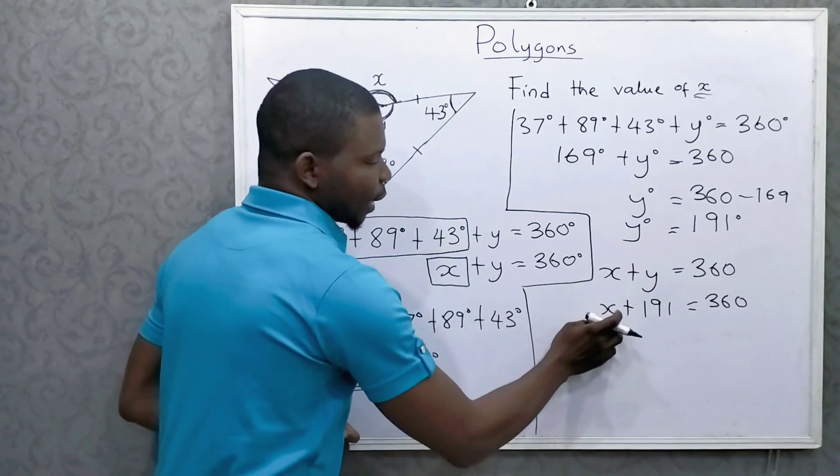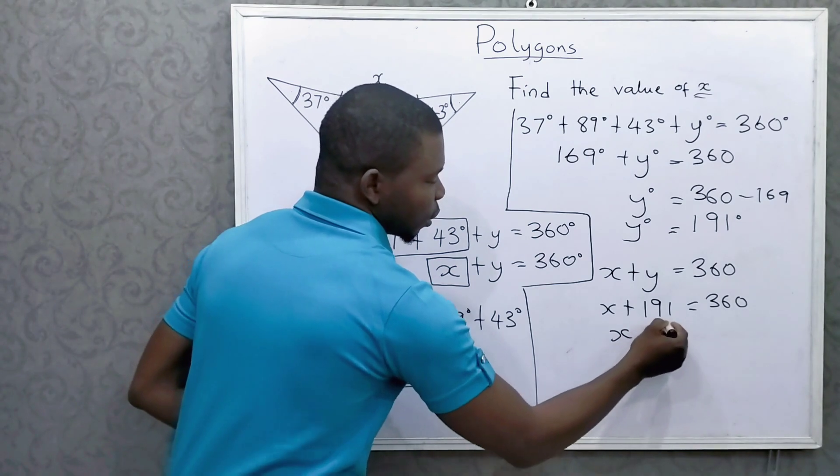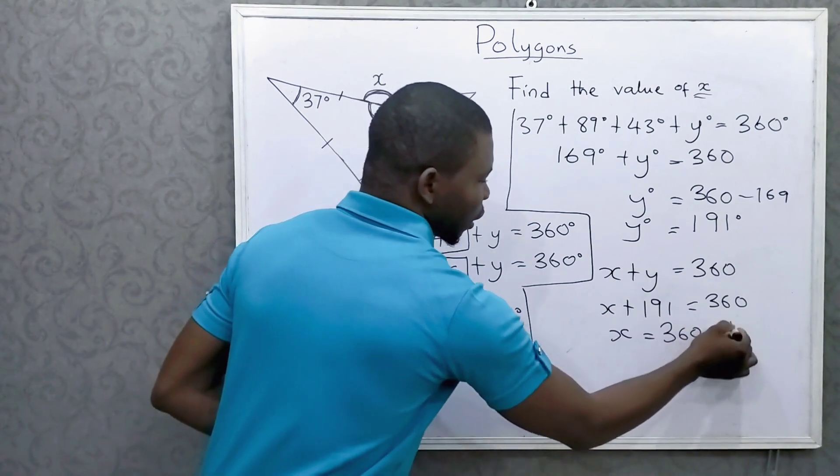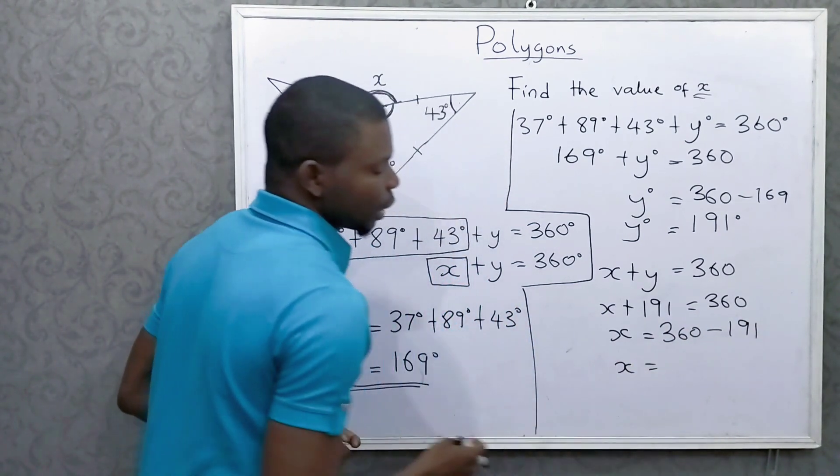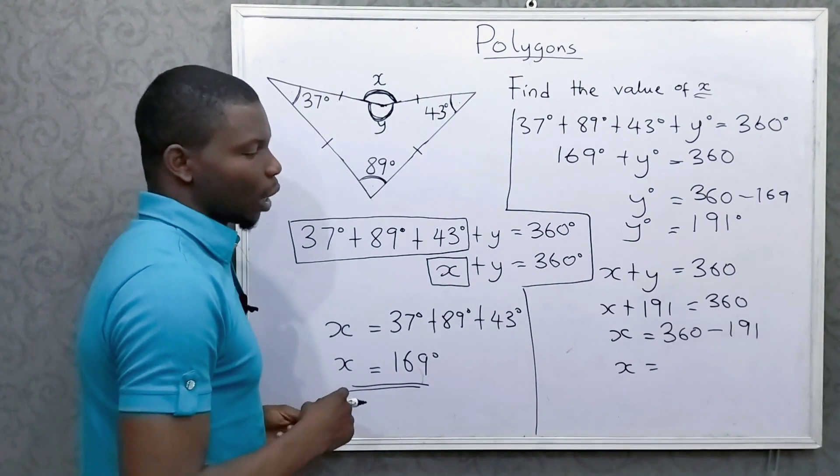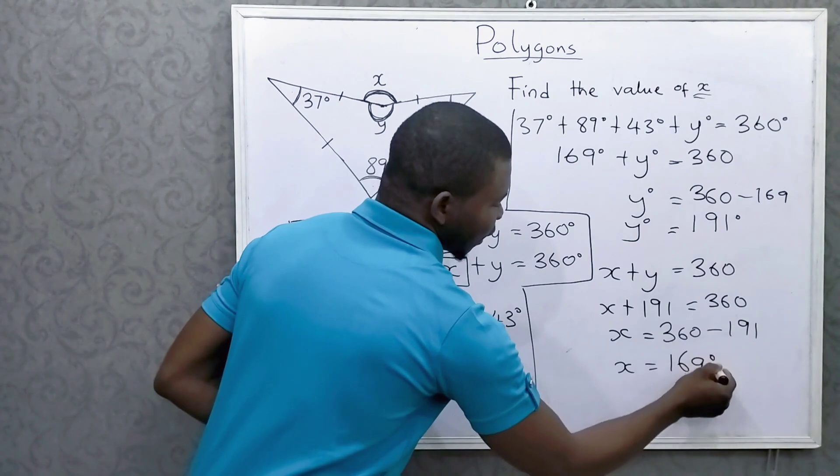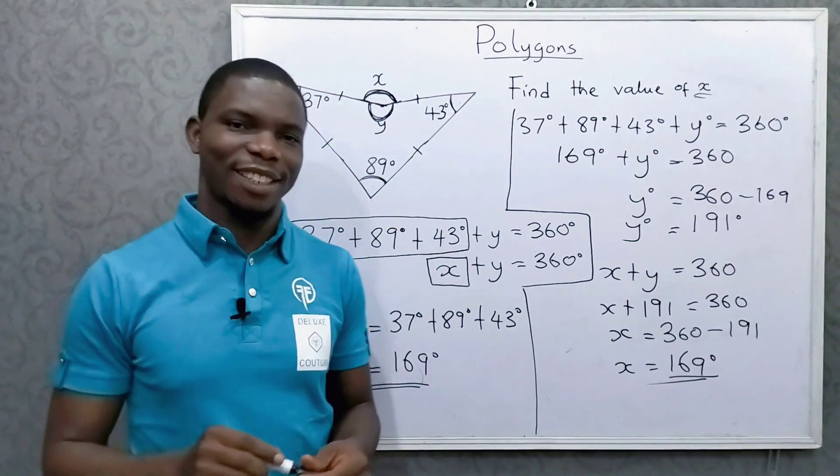So to get x, I simply take 191 over. So it will be 360 minus. As it's crossing the equal sign, it takes a negative sign, right? So 360 minus 191 is also equal to 169. So either way, you get the same answer.